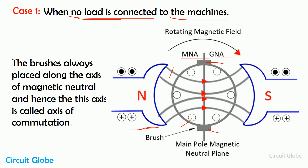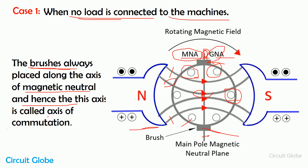No load is connected to the machine means no current flows through the armature conductor, which means no flux is induced in the armature conductor. So only the main field flux is present in the DC generator, and that flux is symmetrically distributed between the armature conductors. This is the polar axis — the central line between the north and south pole. Brushes are always placed along the magnetic neutral axis, and here the magnetic neutral axis and the geometrical neutral axis coincide. This axis is also called the axis of commutation.